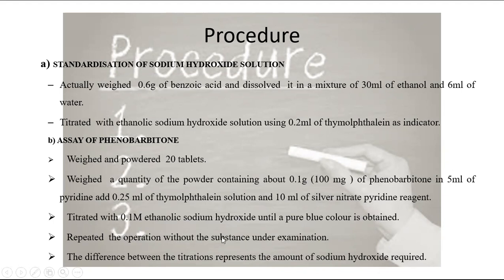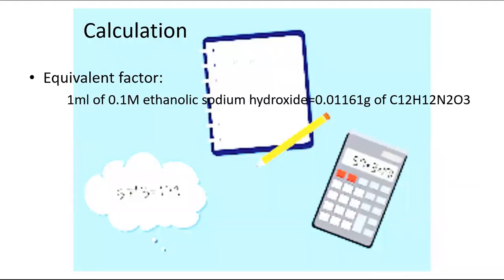Repeat the operation without the tablet powder as a blank titration, keeping 5 ml pyridine, 0.25 ml thymolphthalein solution, and 10 ml silver nitrate. Calculate the difference between the sample and blank titrations. The stoichiometric factor is: 1 ml of 0.1 molar sodium hydroxide is equivalent to 0.01161 g of Phenobarbitone.